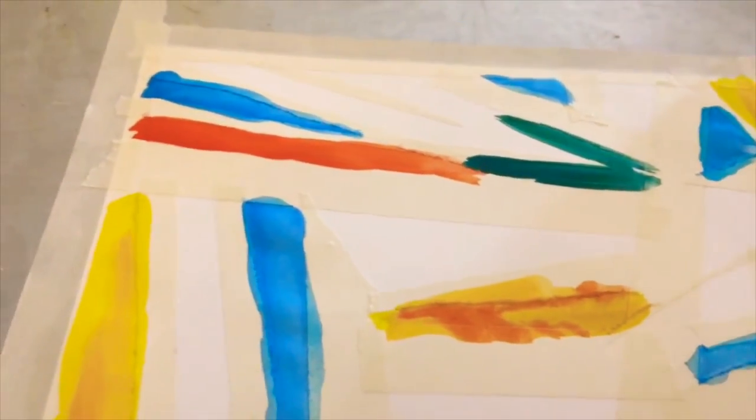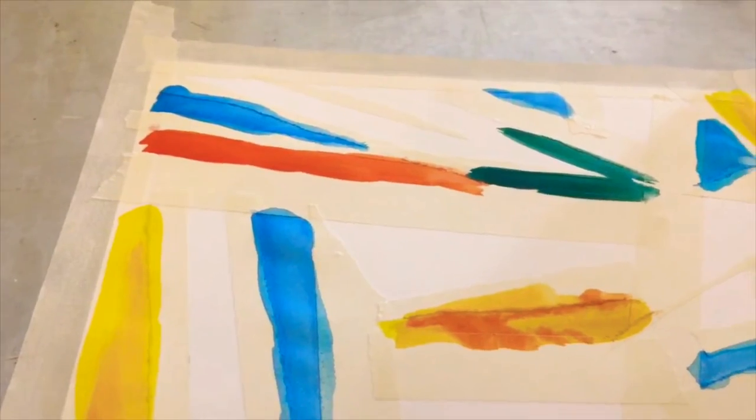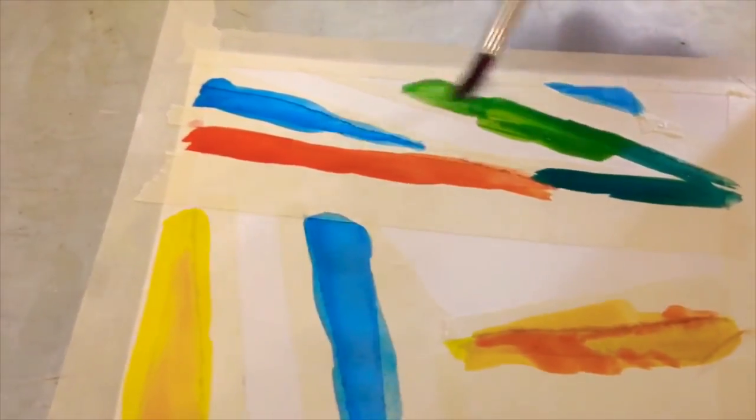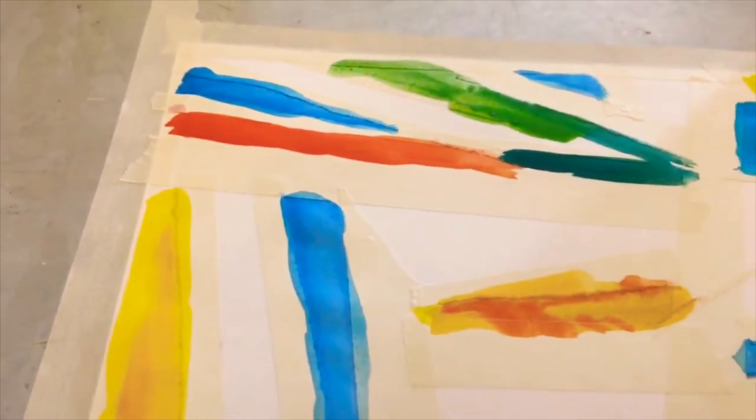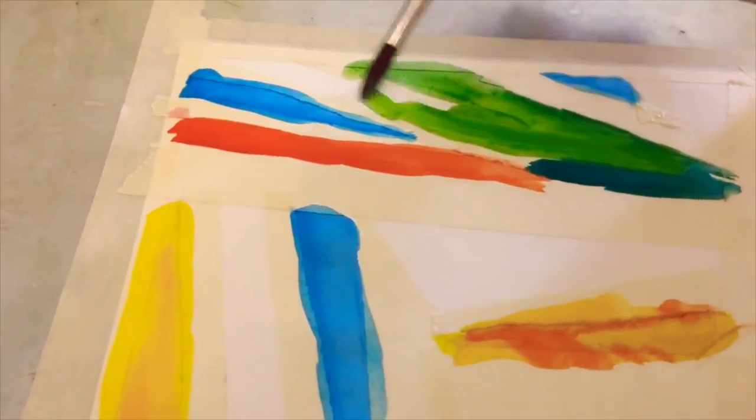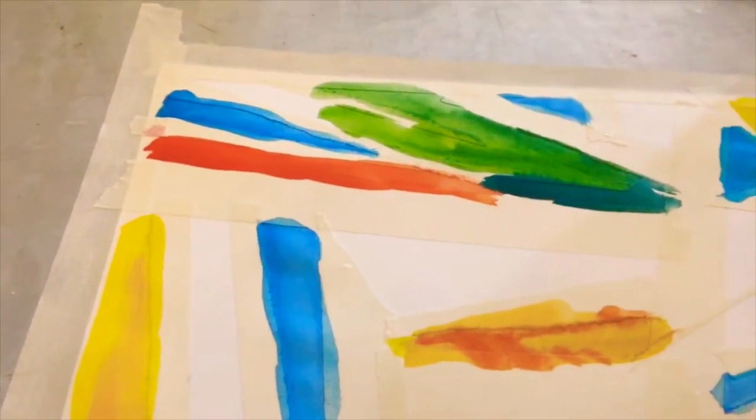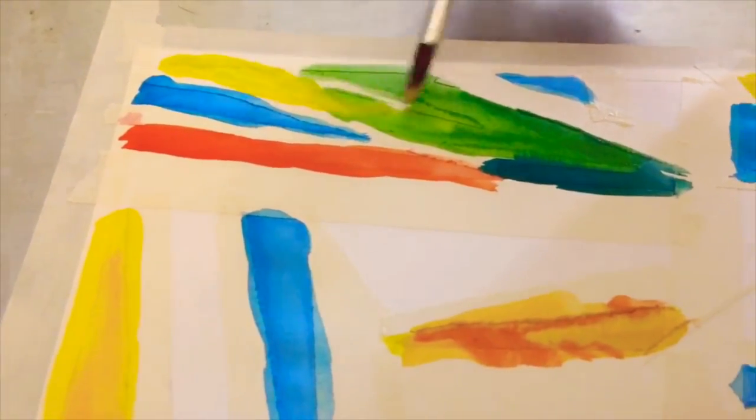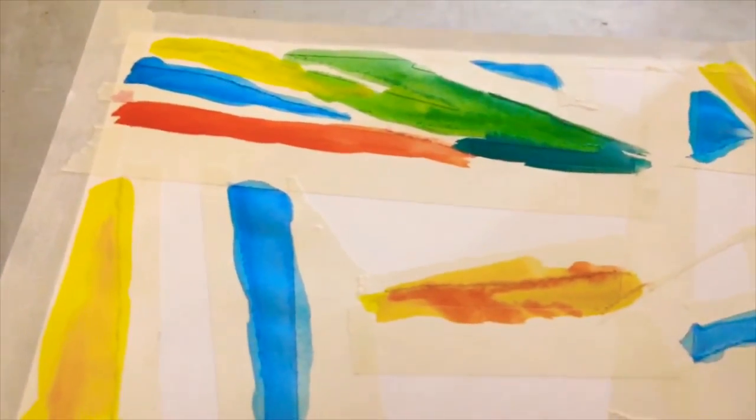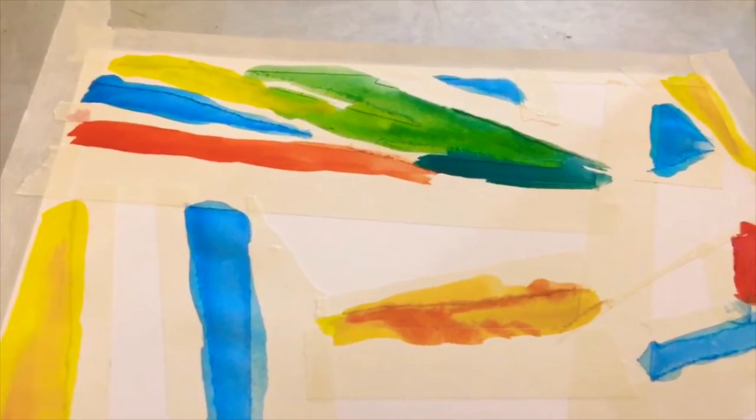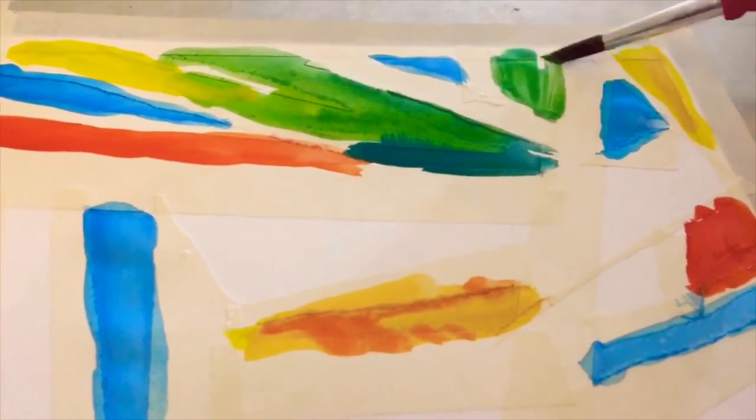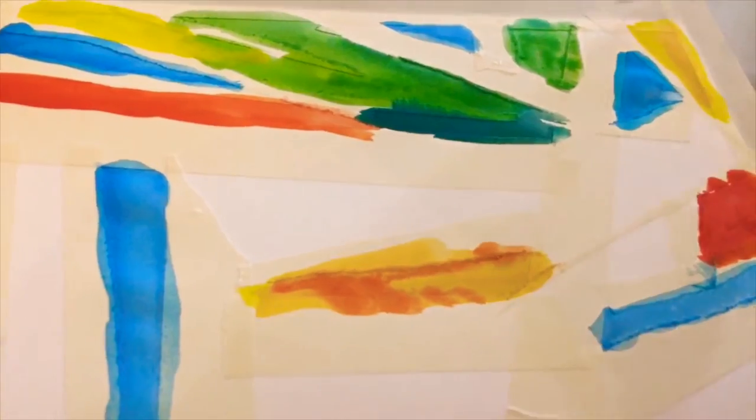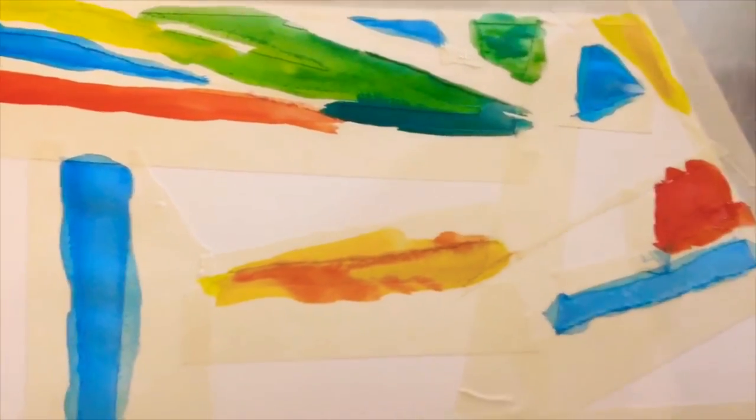You might even add a couple different colors within your shape. The fun part is really going to come when we remove the tape and see what's underneath. You'll see the white space and then the colored spots. It's going to be a lot of fun.